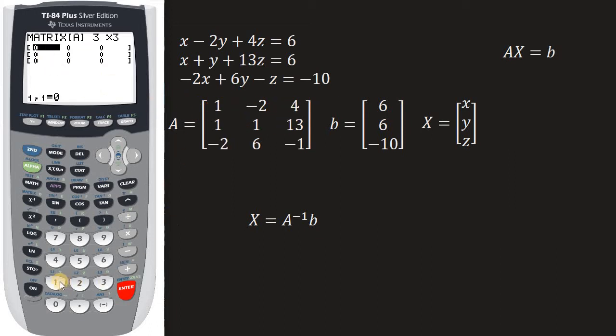So I enter in the 1. So I hit 1, enter, and that puts it in this spot. And then I've got to enter in the negative 2. Now when you enter in negative 2, make sure you don't hit the minus sign. Hit the negative sign down here. So negative 2, enter. And then 4, enter.